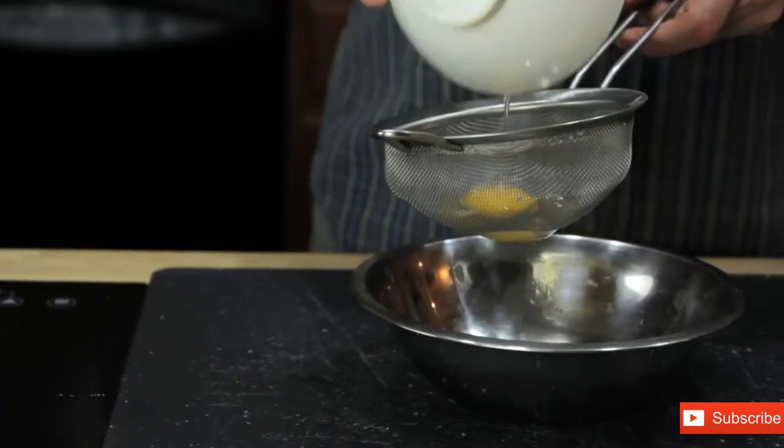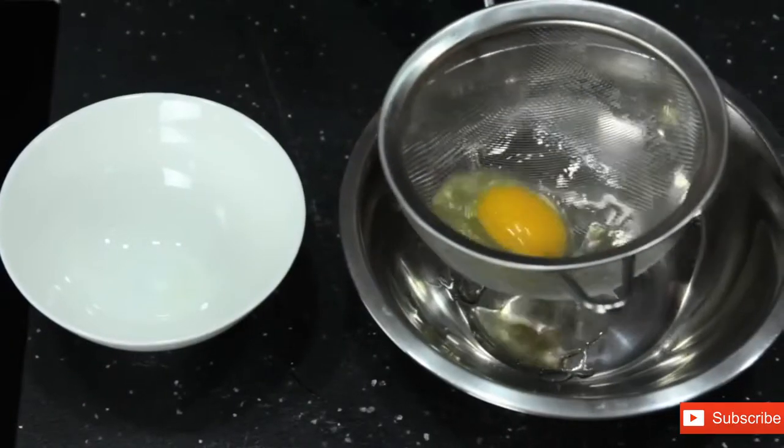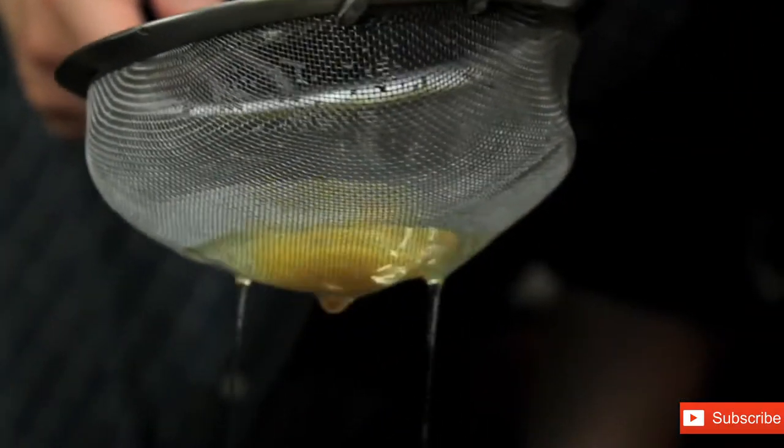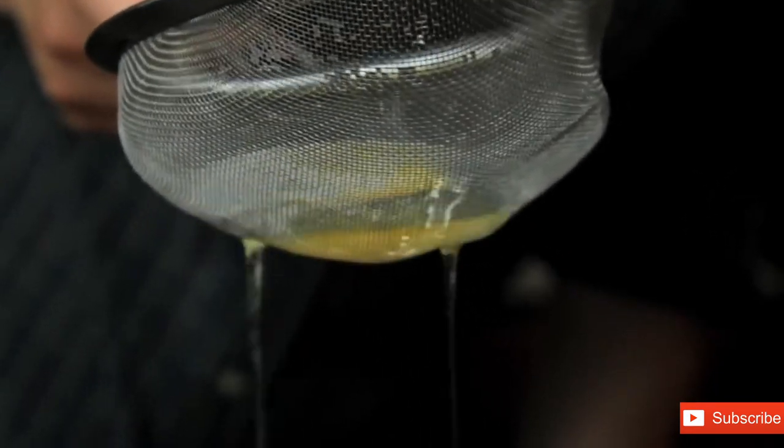To get rid of them, we're going to transfer our eggs to a fine mesh strainer and gently swirl it around until all the excess white is drained away. What you're left with is a nice, tight egg.